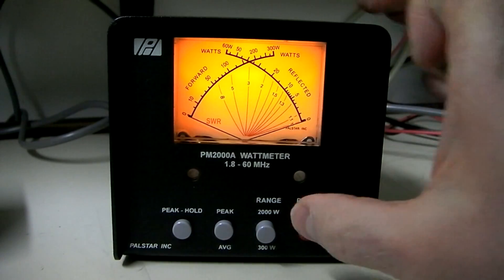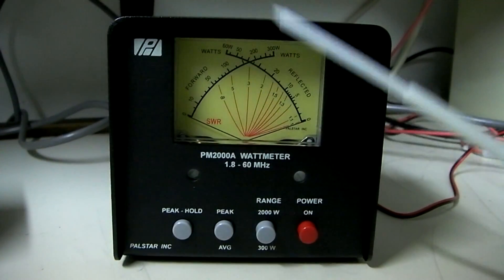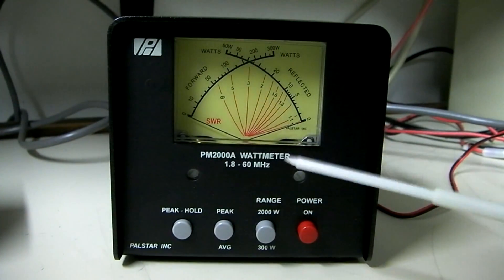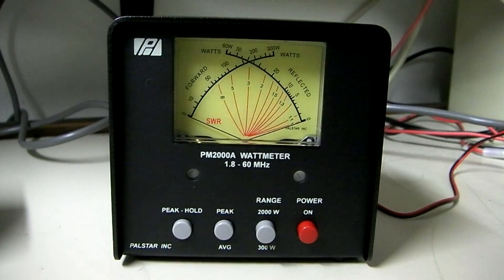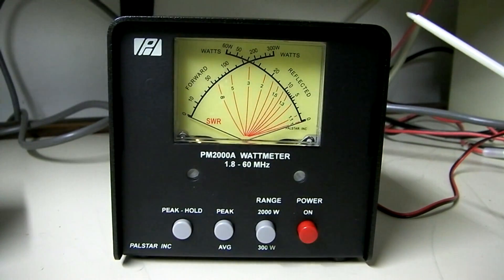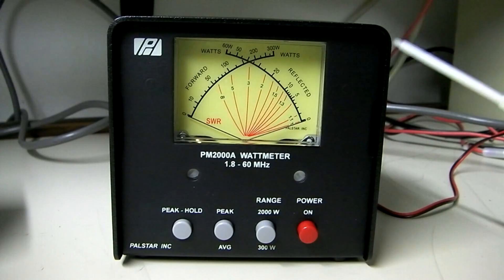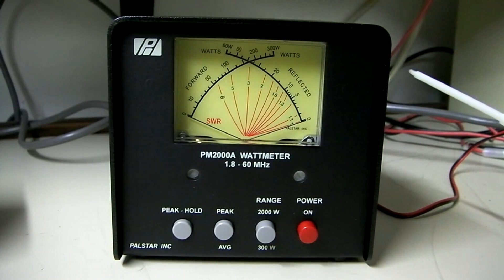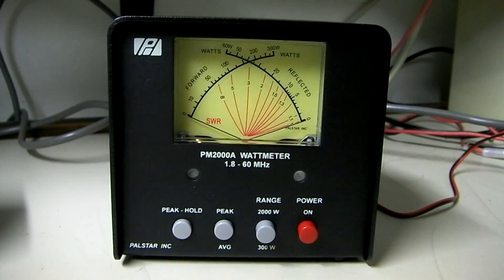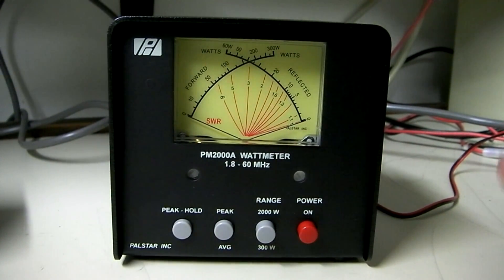It is a powered meter, and not only does the power control the light, but the power also powers a circuit board. This particular meter has what's called active peak reading. So, it should give you a very accurate reading of your single sideband peak operation, which is what most people are looking for.